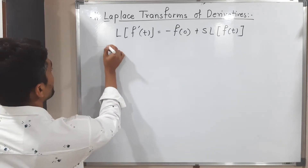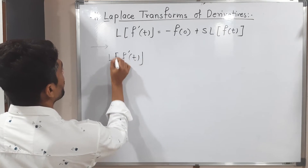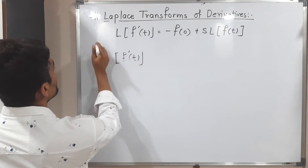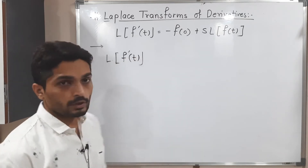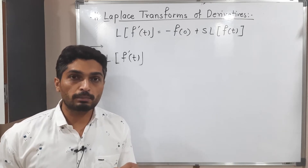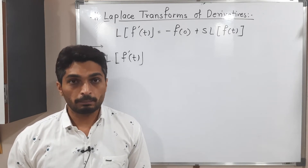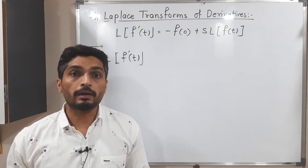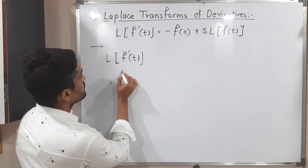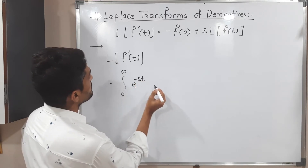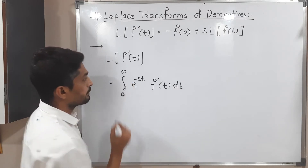We will start with the left hand side, which is the Laplace of F dash of T. You are familiar with the definition of Laplace: it is equal to integration from 0 to infinity of e raised to minus S T times f of T dt. But here, in place of F of T, we have F dash of T. So using the definition we can write: integration 0 to infinity of e raised to minus S T times F dash of T dt.